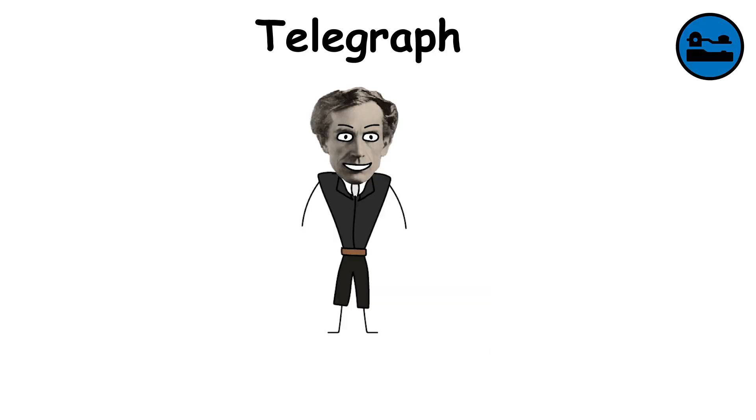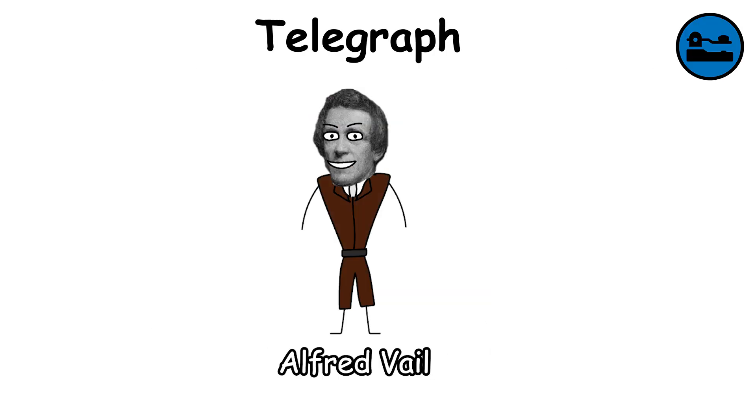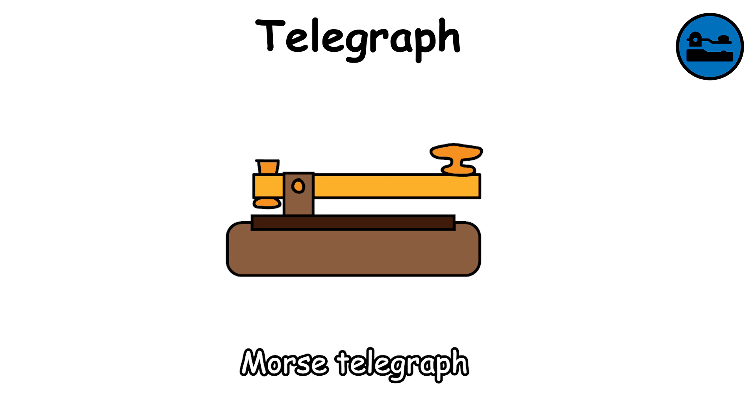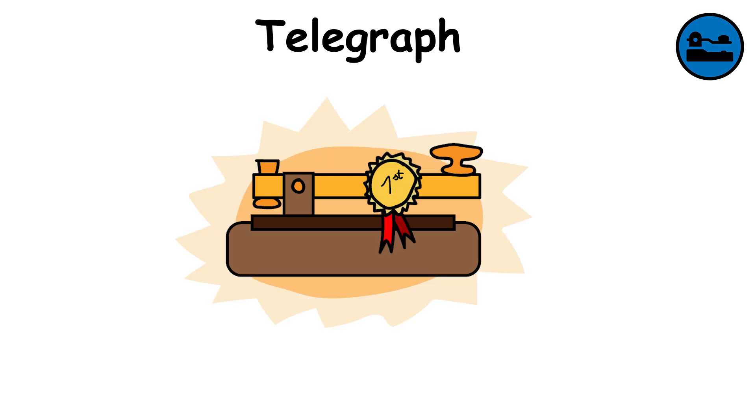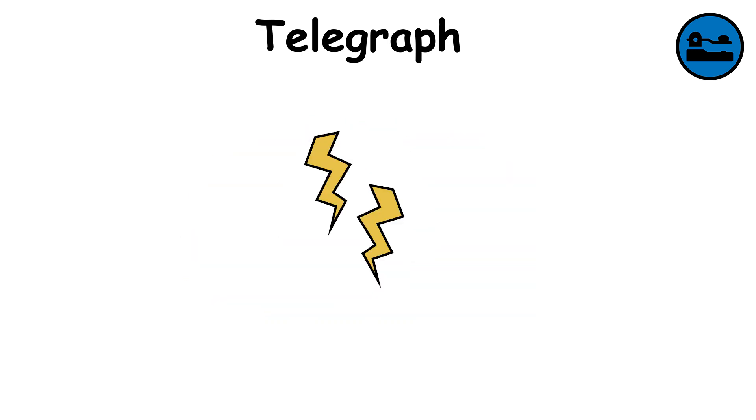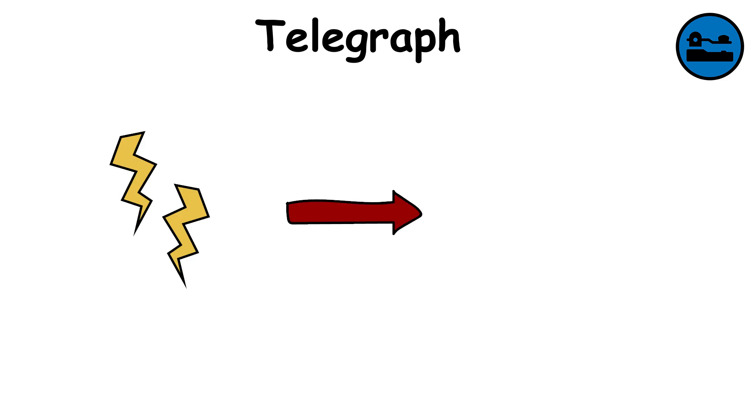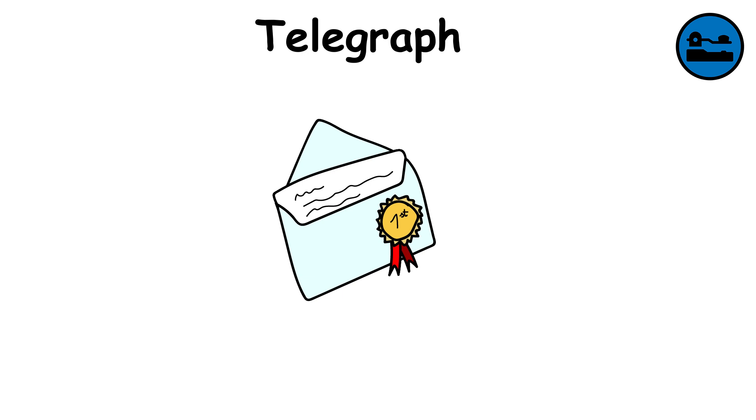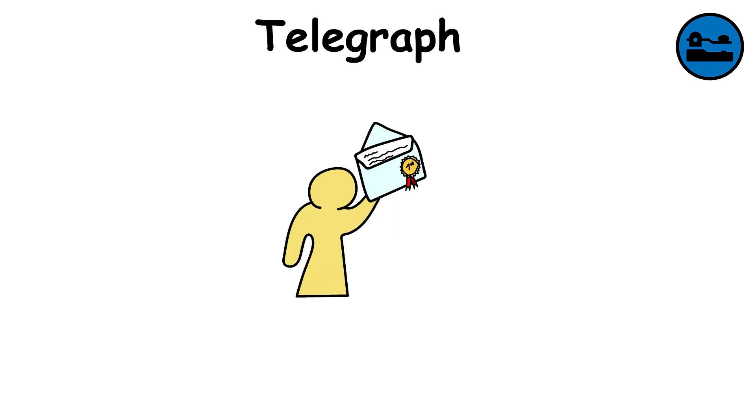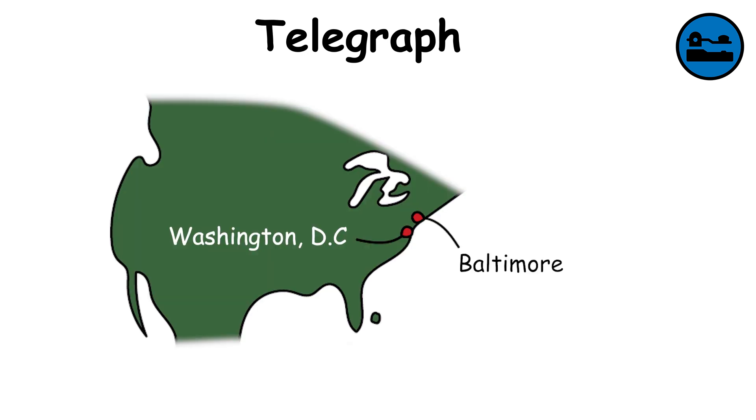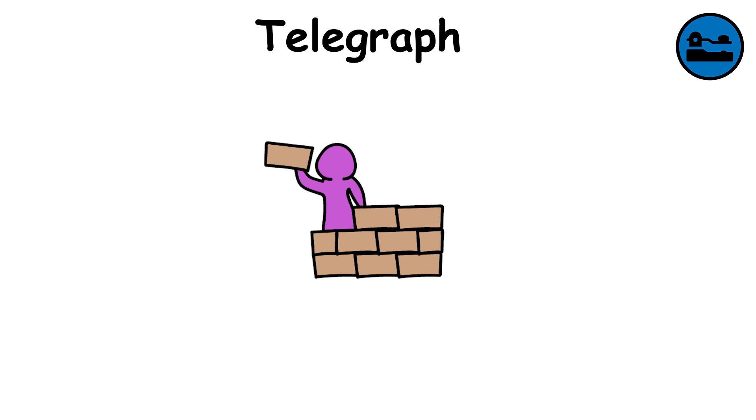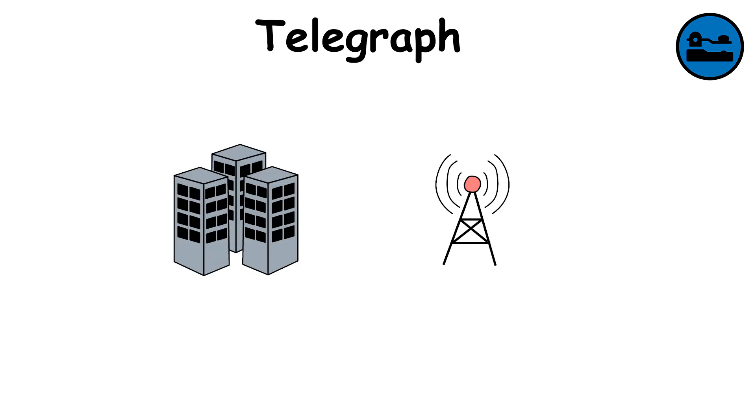Telegraph. Developed by Samuel Morse and Alfred Vale in the 1830s, the Morse Telegraph was the first technology to send messages almost instantly over long distances. It used electrical pulses converted into dots and dashes, known as Morse code. The first message, what hath God wrought, was sent in 1844 from Washington, D.C. to Baltimore, therefore laying the foundation for all modern communication networks.